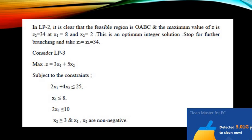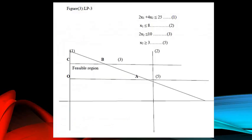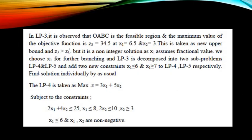LP3 is defined as: maximize Z equal to 3x1 plus 5x2, subject to 2x1 plus 4x2 ≤ 25, x1 ≤ 8, x2 ≤ 10, and the new constraint x2 ≥ 3, where x1 and x2 are non-negative. Solving graphically, the feasible region is O, A, B, and C. The maximum value Z3 = 34.5 occurs at x1 = 6.5 and x2 = 3. This becomes the new upper bound since Z3 > ZL, but it is not an integer solution because x1 is fractional.